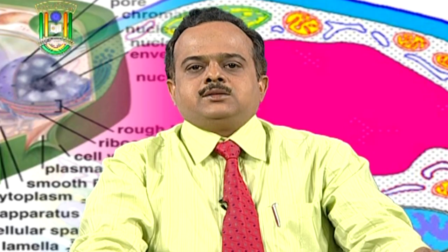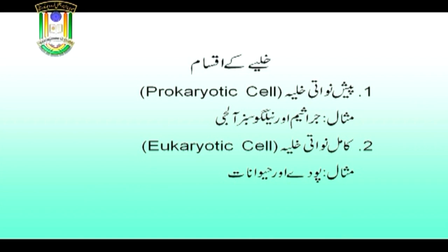خلیہ کی اقسام جیسا آپ سلائیڈ دیکھ رہے ہیں: پیش نواتی خلیہ اور کامل نواتی خلیہ۔ پیش نواتی خلیہ کو پروکیاریوٹک سیل کہتے ہیں جس کی مثال جراسیم اور نیلگوں سبز آلجی ہے۔ کامل نواتی خلیہ کی مثال پودے اور حیوانات ہیں۔ پیش نواتی خلیہ ابتدائی خلیہ مانے جاتے ہیں اور ان خلیوں میں مرکزہ اور مرکزی جھلی غیر موجود ہوتی ہے۔ کامل نواتی خلیہ بہت زیادہ ترقی یافتہ سمجھے جاتے ہیں اور ان میں مرکزہ، نمائیہ، واضح خلوی جلی، مرکزی جلی اور مرکزی مایہ پائے جاتے ہیں۔